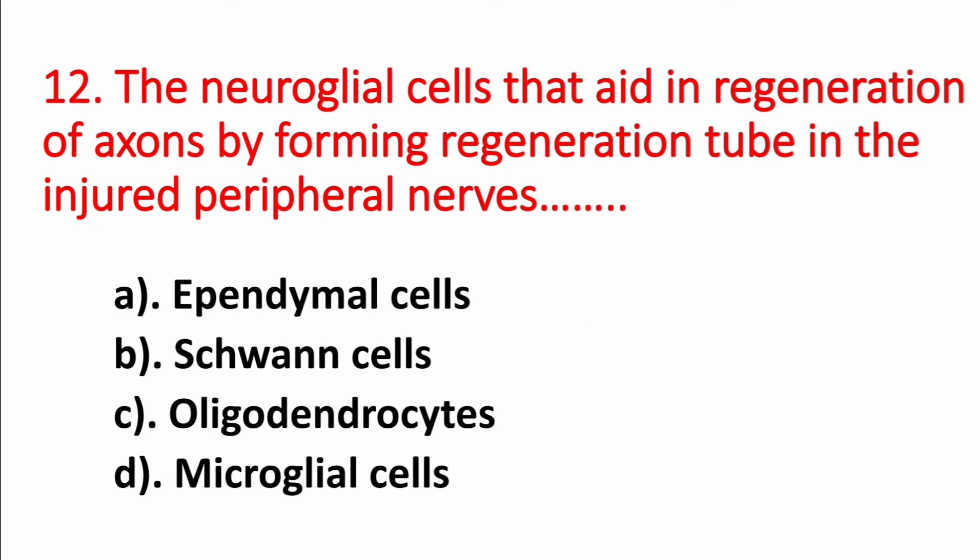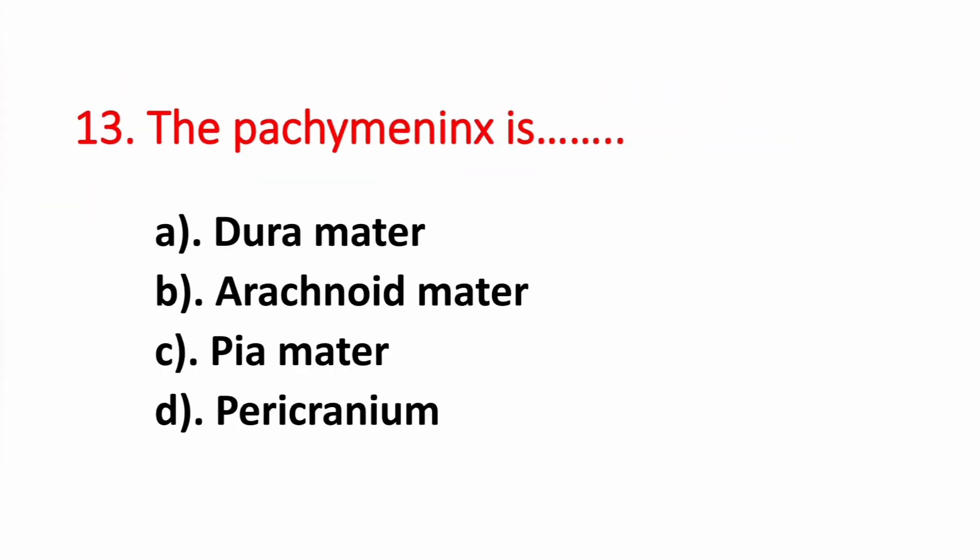Question number 12. The neuroglial cells that aid in regeneration of axons by forming a regeneration tube in the injured peripheral nerves. Option A: Ependymal cells. Option B: Schwann cells. Option C: Oligodendrocytes. Option D: Microglial cells. The answer is Option B, Schwann cells.